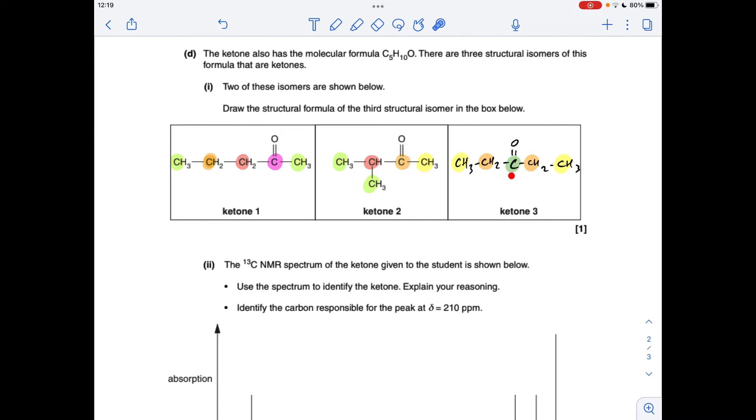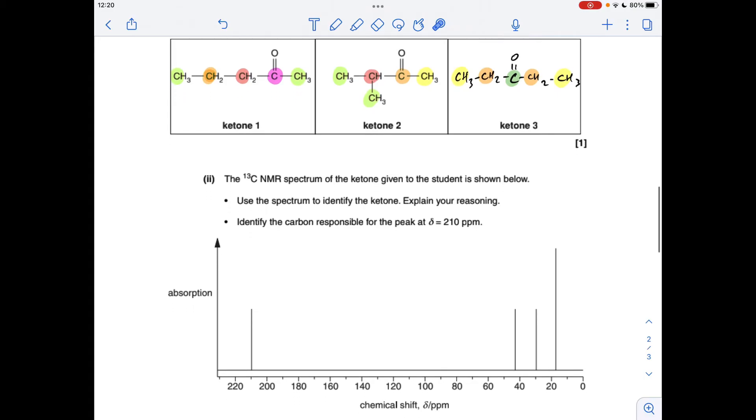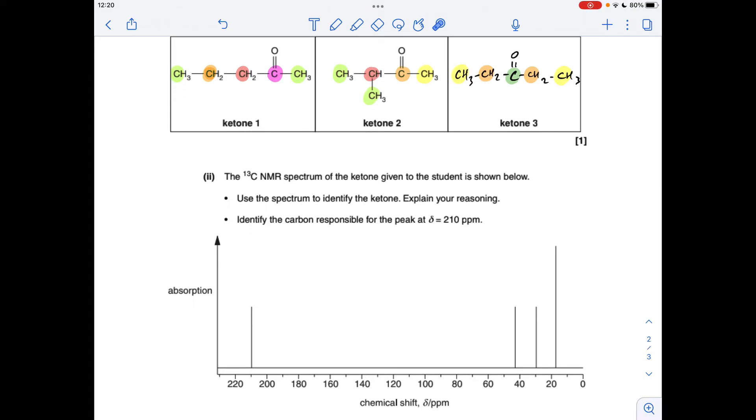And we've got symmetry around this C double bond O, so one, two, three carbon environments in ketone three. So if we look at the spectrum, we've got one, two, three, four carbon environments, so obviously ketone two.